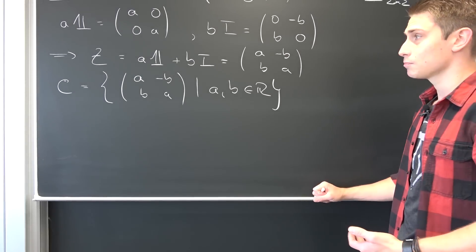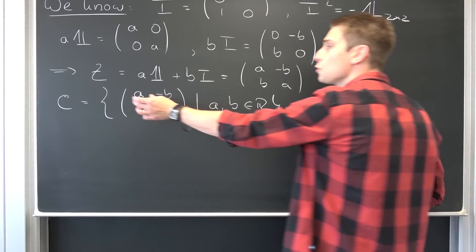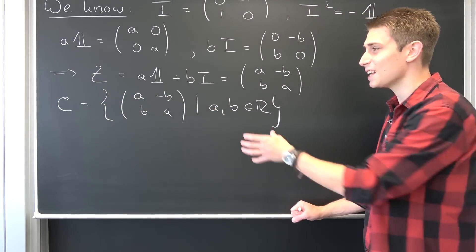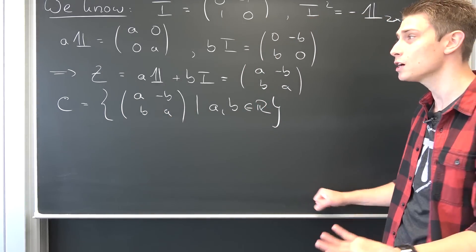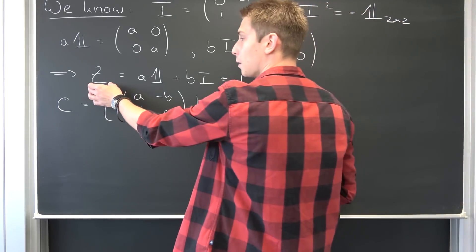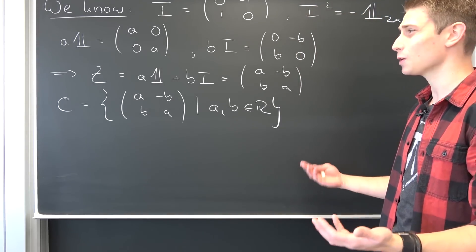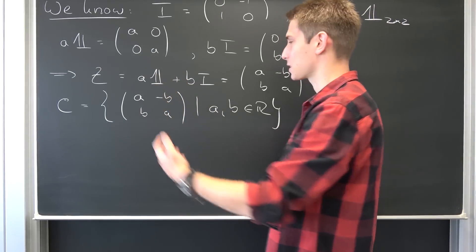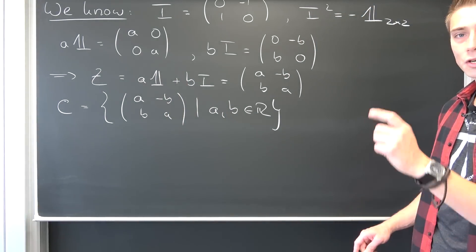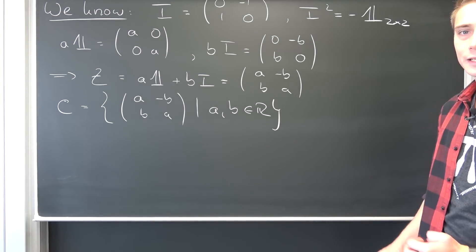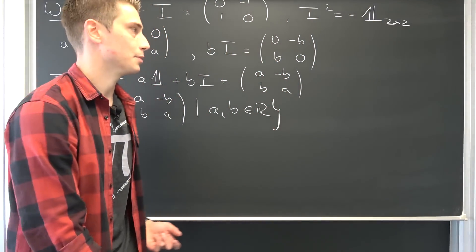Now we can take a look at operations. What happens if we add two complex numbers together — is the result still an element of the set of complex numbers? What happens if we multiply two complex numbers together, or divide by a complex number? What does it even mean to divide by a matrix? Also, one more definition I would like to bring in is the notion of real and imaginary parts of complex numbers.